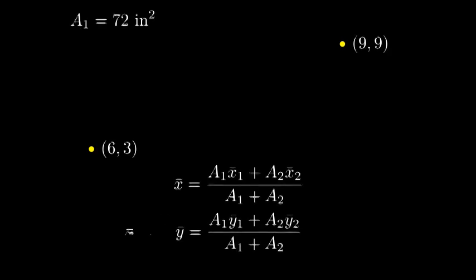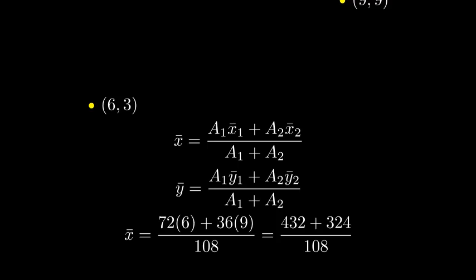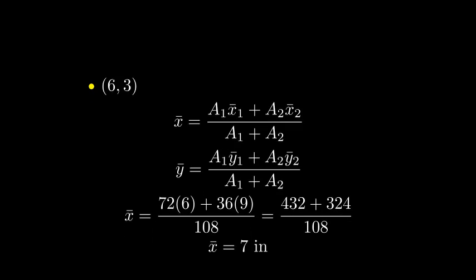Let's solve for x-bar first, plugging in our values. 72 times 6 plus 36 times 9, all divided by 108. This gives us x-bar equals 7 inches.